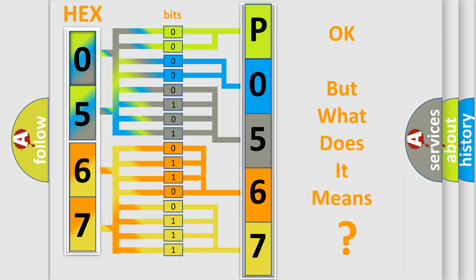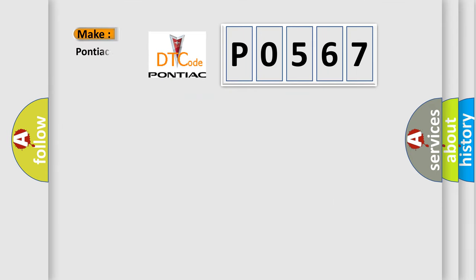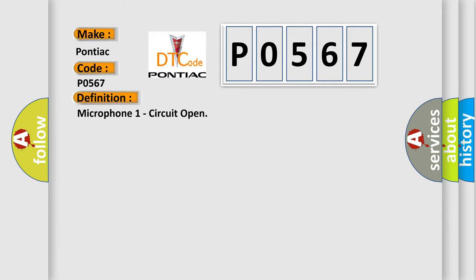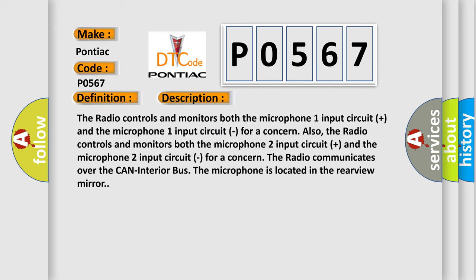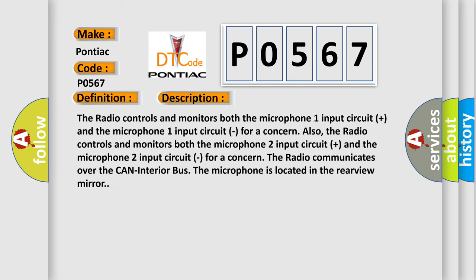The number itself does not make sense to us if we cannot assign information about what it actually expresses. So, what does the diagnostic trouble code P0567 interpret specifically for Pontiac car manufacturers? The basic definition is: microphone one circuit open. The radio controls and monitors both the microphone one input circuit plus and the microphone one input circuit. The radio also controls and monitors both the microphone two input circuit plus and the microphone two input circuit. The radio communicates over the CAN interior bus. The microphone is located in the rear view mirror. This diagnostic error occurs most often in these cases.